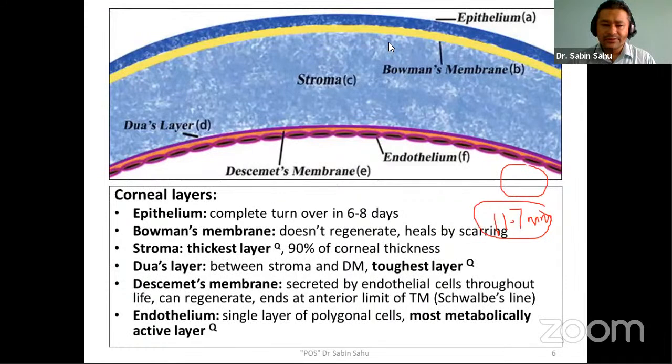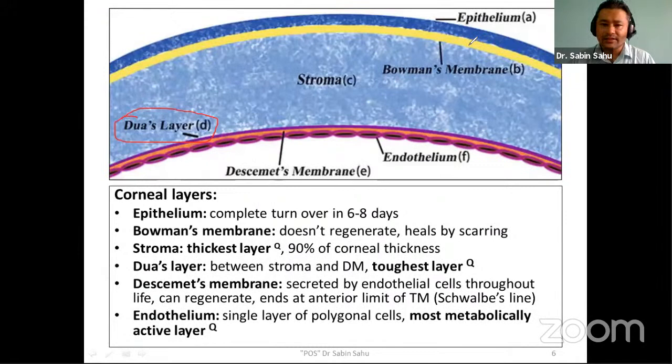Let's move on to the layers of cornea, which is very important. Traditionally, cornea was thought to have five layers, but the addition of the Dua's layer or pre-Descemet layer has now made it a six-layered structure, starting from epithelium in the outermost layer, followed by Bowman's layer, then stroma, Dua's layer, Descemet's membrane, and endothelium.